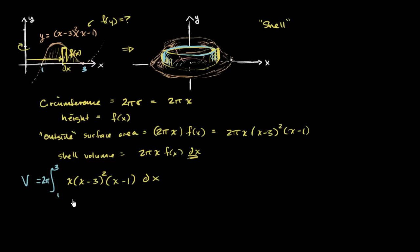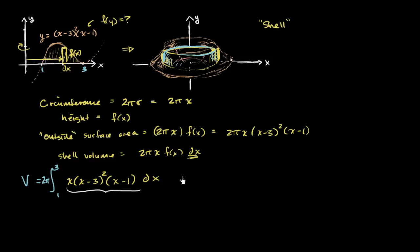Where we left off in the last video, we had set up a definite integral using the shell method for this strange solid of revolution. So now let's just evaluate the integral. Like we've seen many times in these types of problems, we really just have to do some polynomial multiplication right over here.